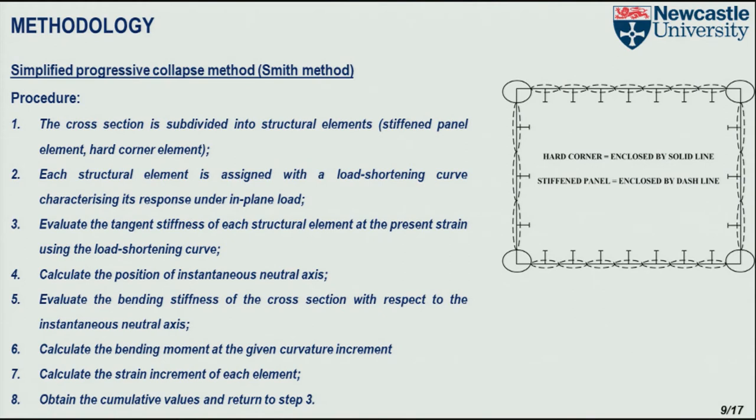Since we now have the tangent stiffness of all the elements, we can evaluate the overall bending stiffness of the cross-section with respect to the instantaneous neutral axis. We now know all the terms in the matrix, so for a given horizontal curvature and vertical bending curvature, we can solve this equation to calculate the bending moment increments. We do this calculation procedure incrementally, and finally we obtain a bending moment-curvature curve. The peak of that curve is our ultimate ship hull strength.